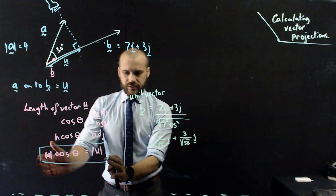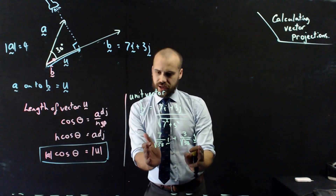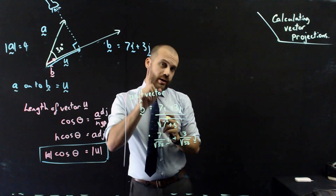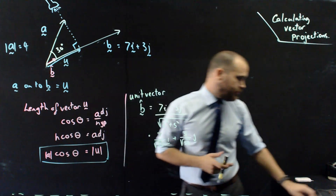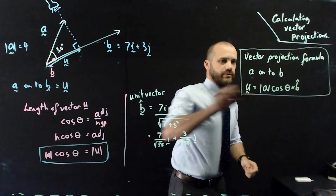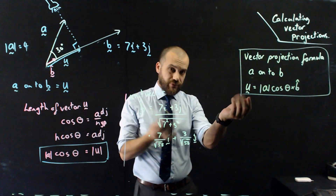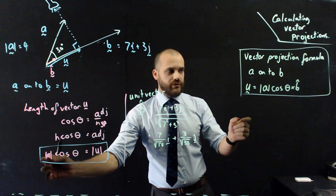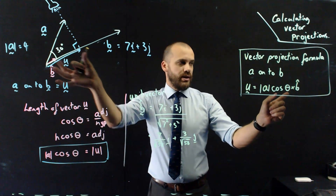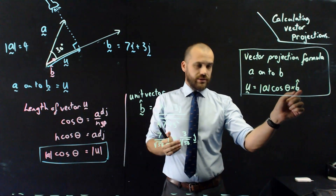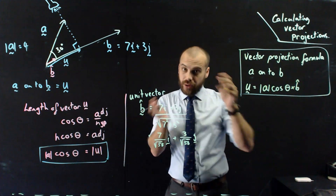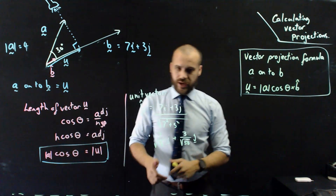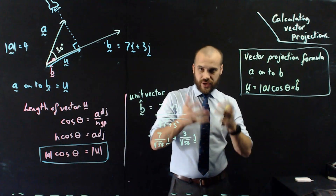The unit vector of 7i + 3j is (7i + 3j) divided by its magnitude, giving 7/√58 i + 3/√58 j. That's the unit vector. Now, here is our vector projection formula: if we're projecting A onto B to get vector U, it equals the magnitude of A times cos θ — giving the length — multiplied by the unit vector of B, giving us the components i and j.